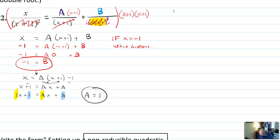So now I found both a and b, and I can rewrite the answer. So the answer is going to be a was one. So I'll write it as one over x plus one plus negative one over x plus one quantity squared. And that would be like a final answer for this partial fraction decomposition.